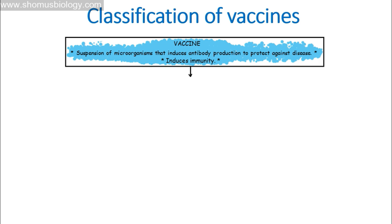Once our body produces antibodies — very specific fighting agents against those antigens or pathogens — then in the future, if that same kind of bacteria or microorganism infects us, those antibodies are already prepared. Our body is already ready to fight against them, so we are not going to feel sick from that same microorganism infection again. That's the overall story of vaccines and vaccination.